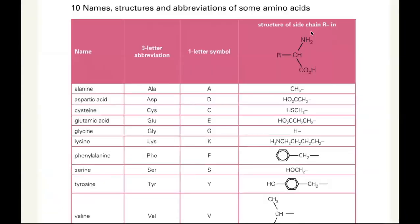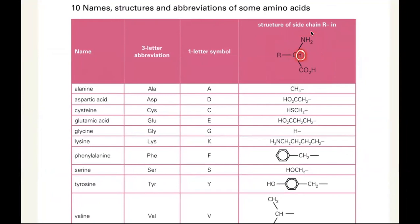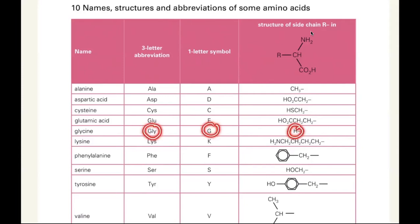This is the table given in the data booklet. They give you the general structure of an amino acid — that carbon is attached to a hydrogen, an NH2, and a COOH — plus the R group. So the R group can be one of the listed groups, sometimes called side chain, sometimes called R group. Glycine, with one-letter symbol G, is when your R is a hydrogen. The second simplest amino acid is alanine.